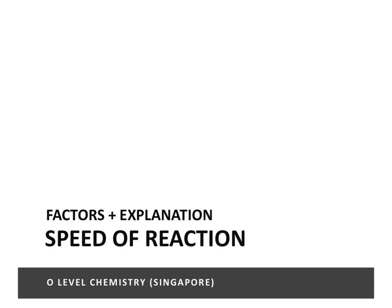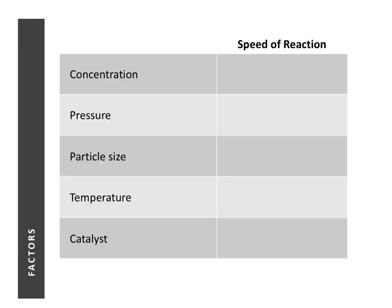In this lesson we're going to learn about the different factors that affect the speed of reaction, how they affect the speed of reaction, and why they affect the speed of reaction. There are five factors that affect the speed of reaction: concentration, pressure, particle size, temperature, and catalyst.